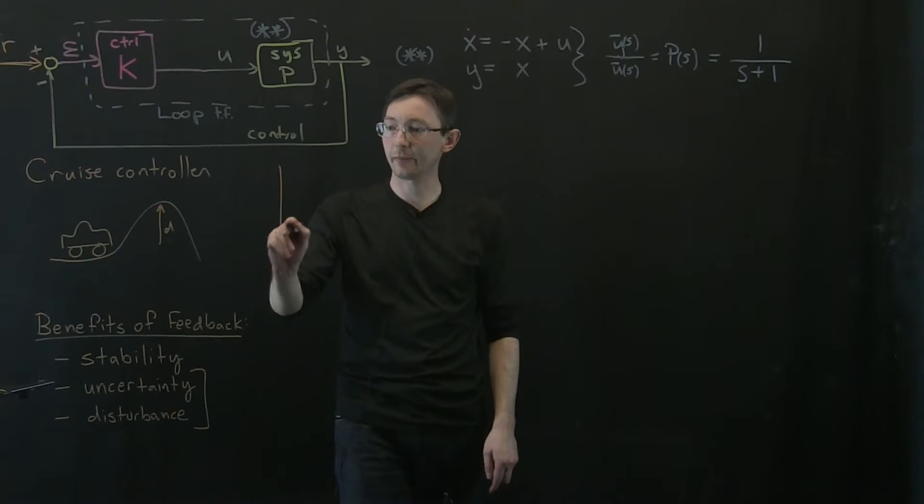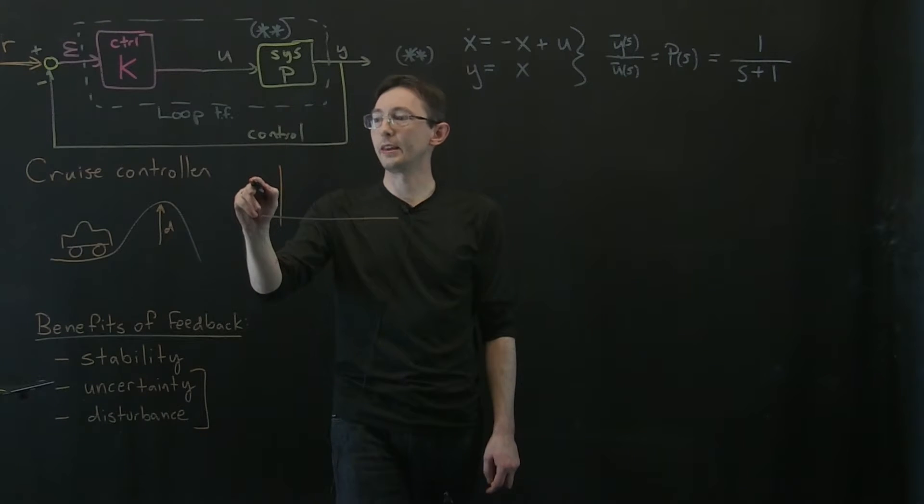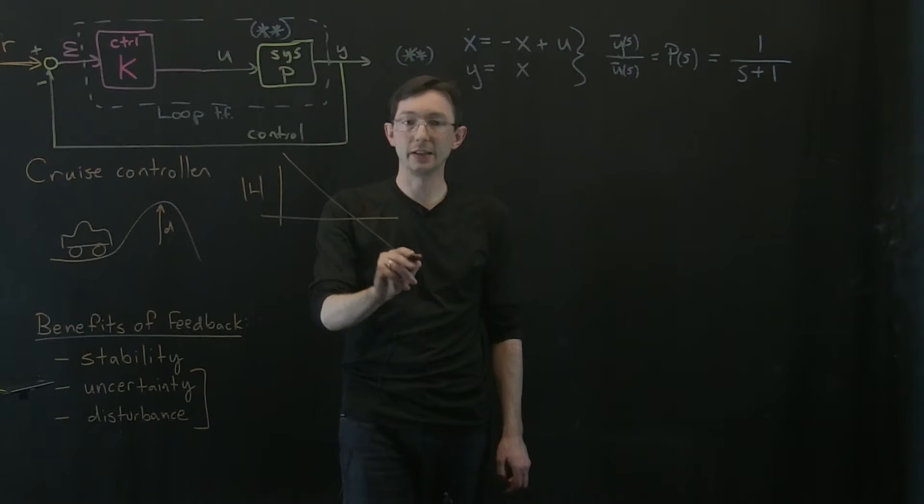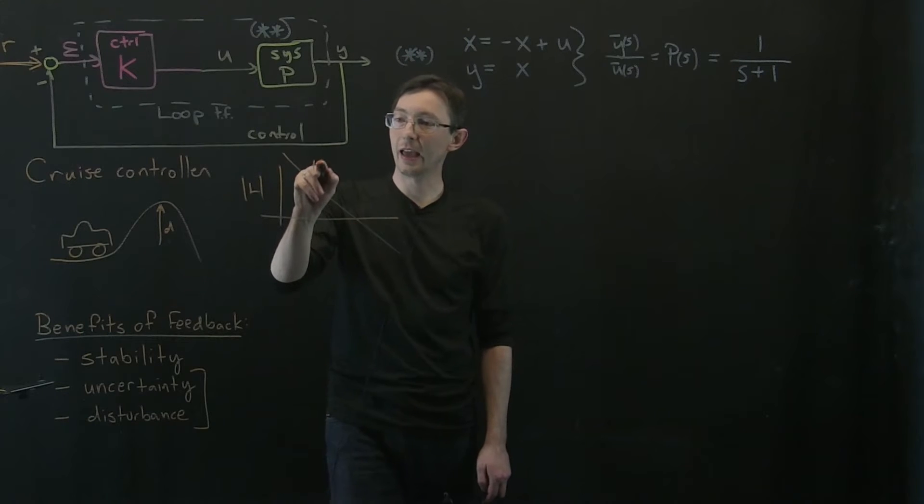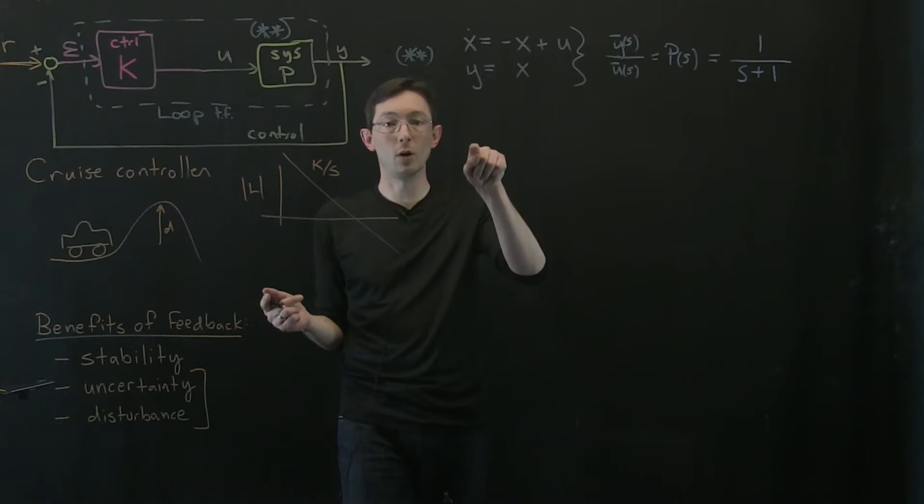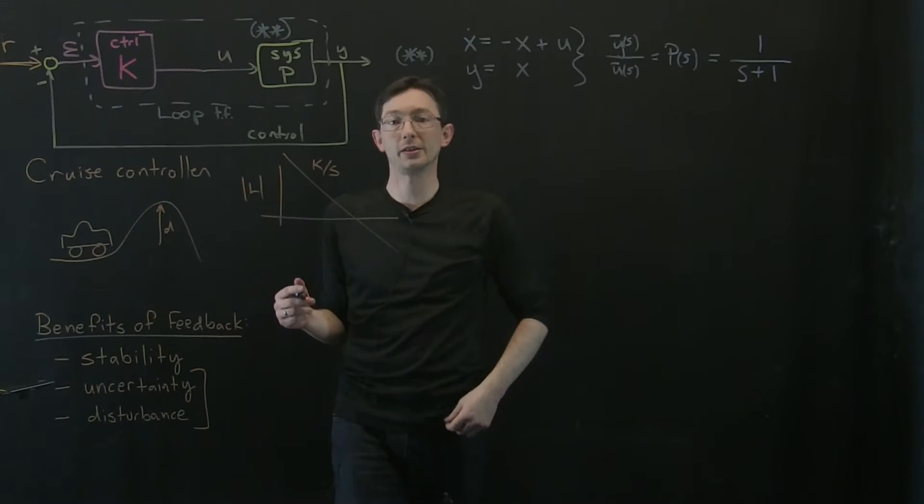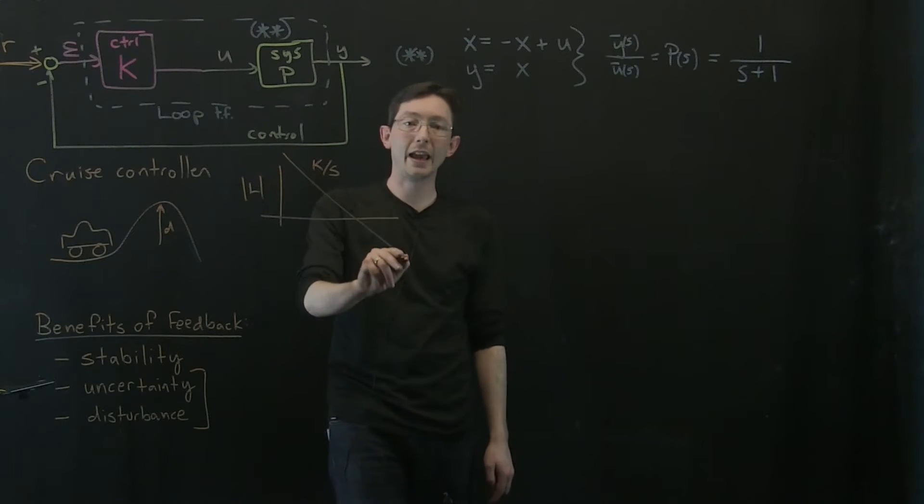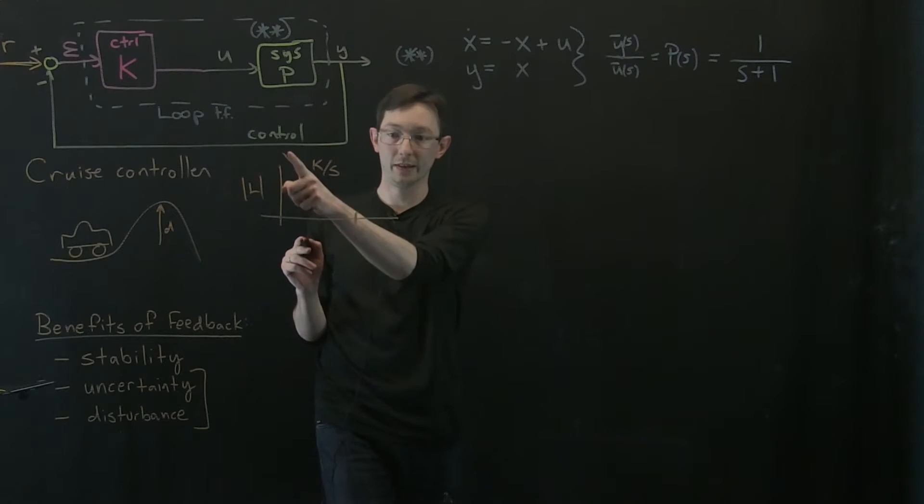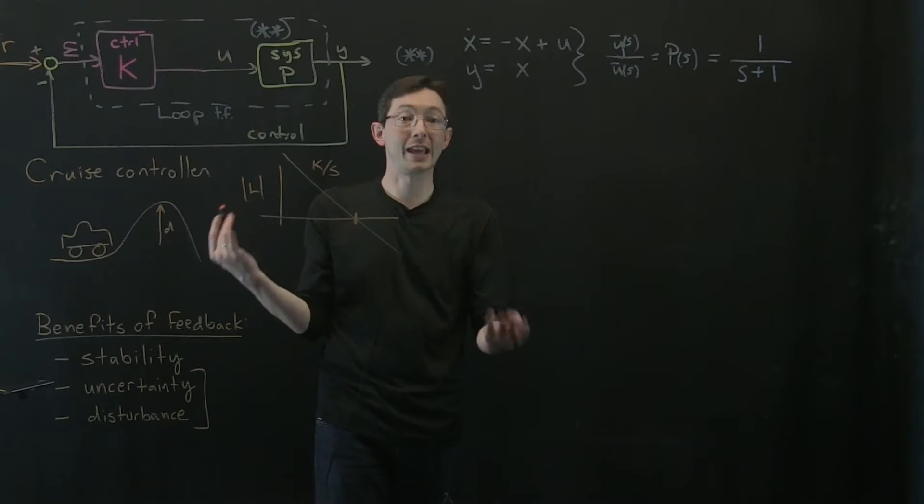So if I was going to plot the Bode plot, we would want the magnitude of this loop to look like a simple integrator, which is like k over s. A regular integrator would be 1 over s in the Laplace transform domain. Here we're doing k over s so that we can choose the crossover point, the bandwidth to be about omega equals k.